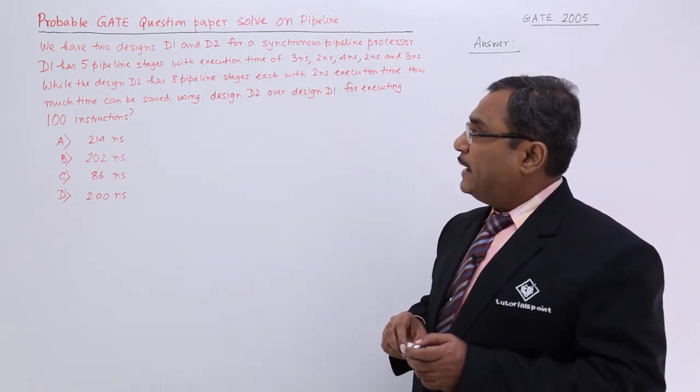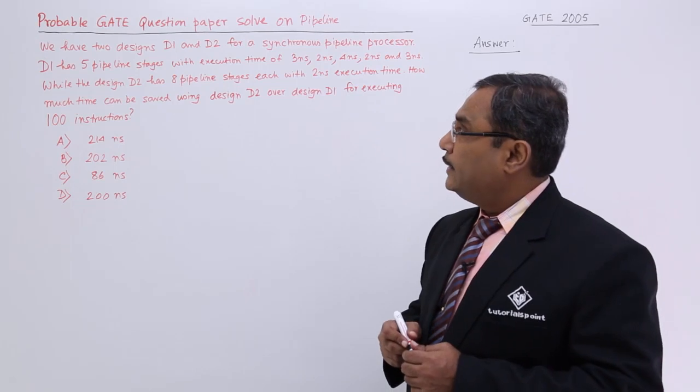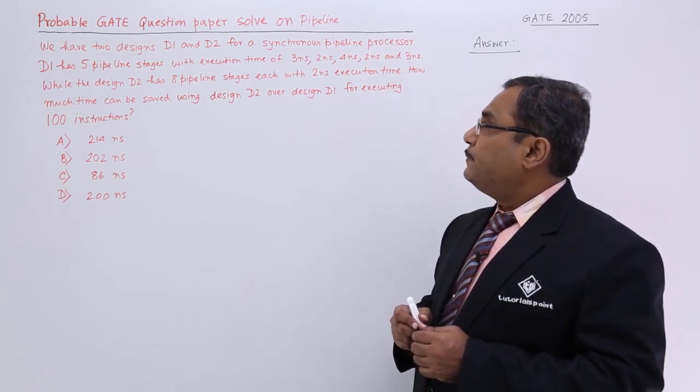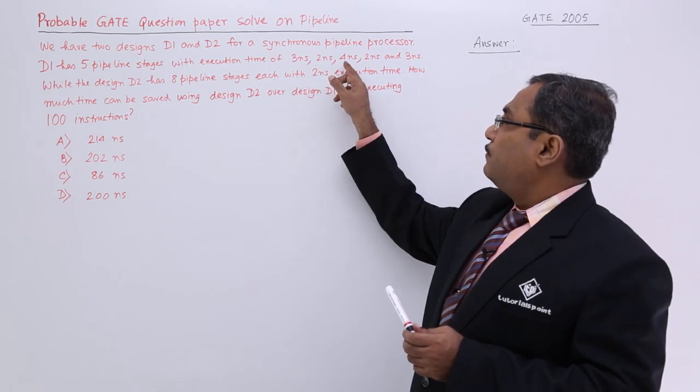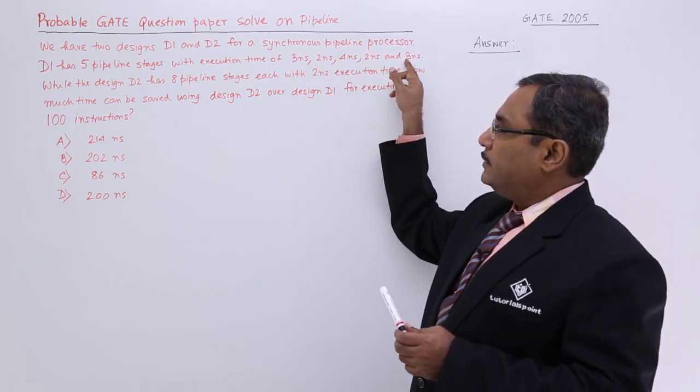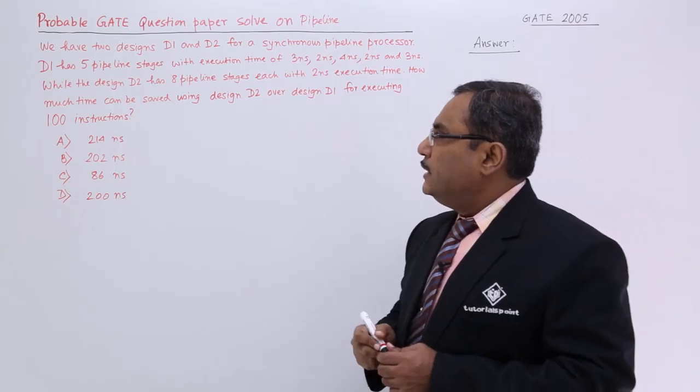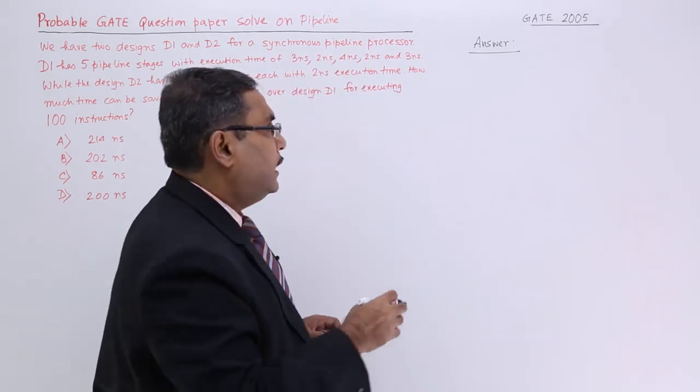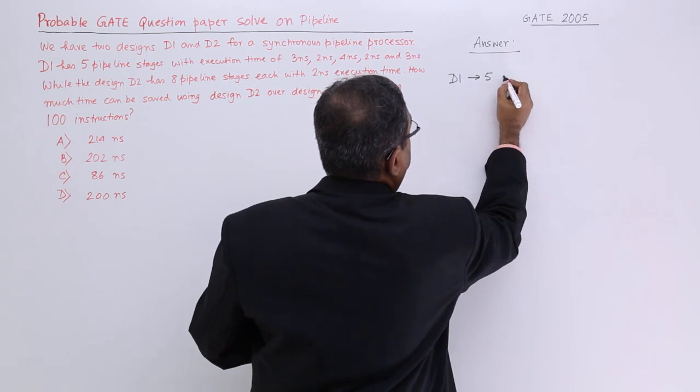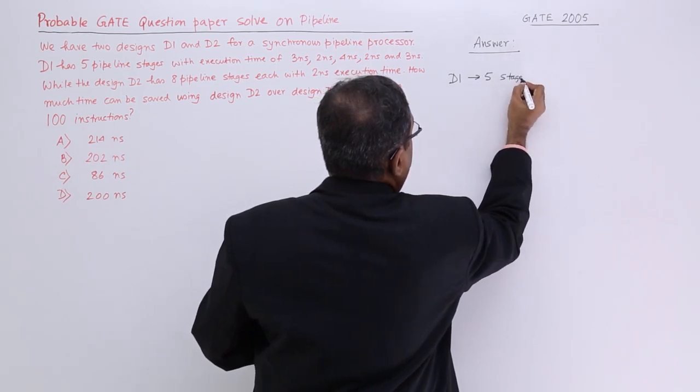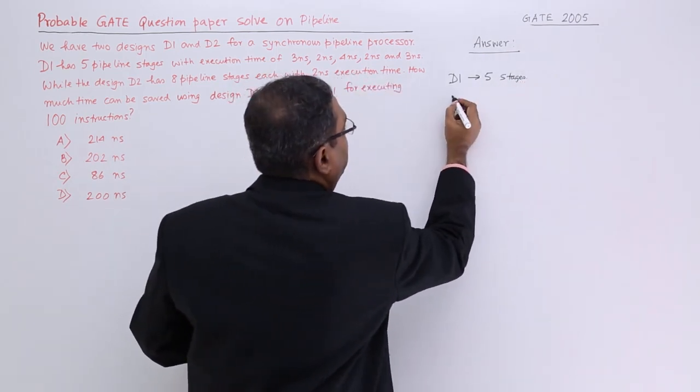D1 has 5 pipeline stages with execution time of 3 nanosecond, 2 nanosecond, 4 nanosecond, 2 nanosecond, again 3 nanosecond. That means D1 has got 5 pipeline stages. It is having 5 stages.